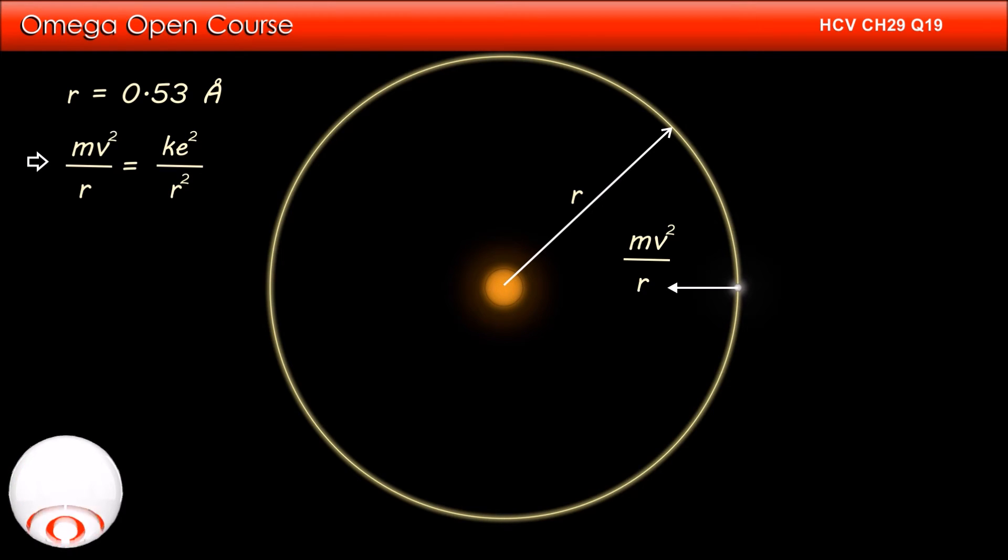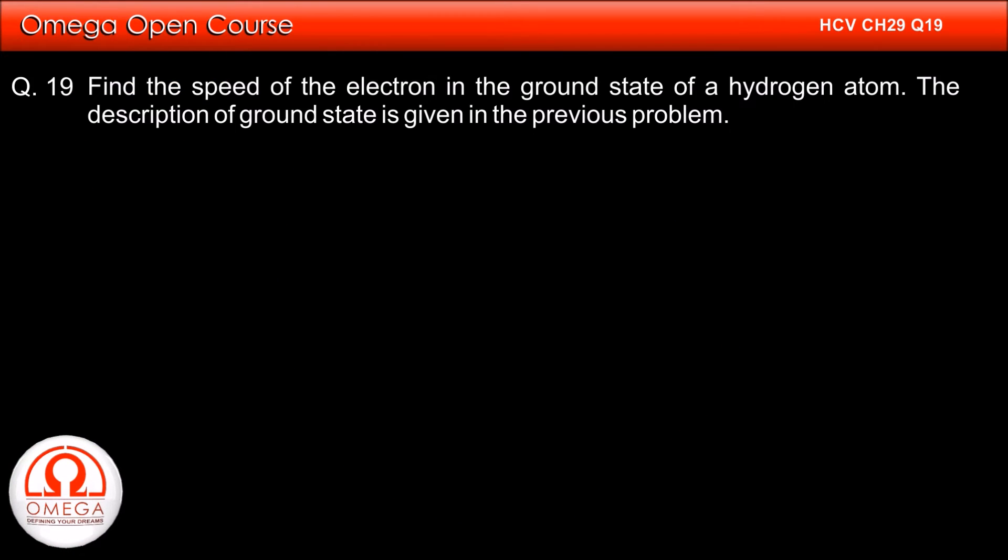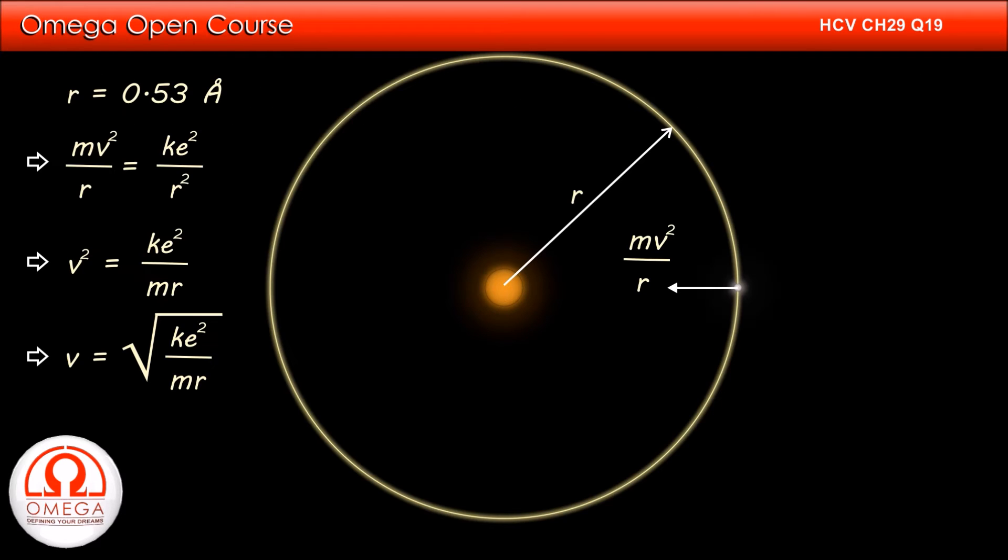Simplifying, we get v square is equal to ke square divided by m into r, or v is equal to root under ke square divided by mr.